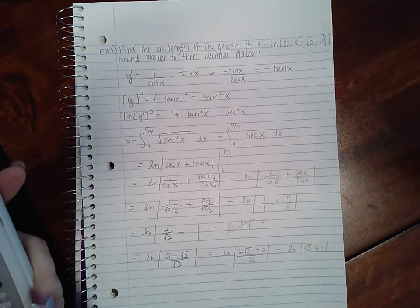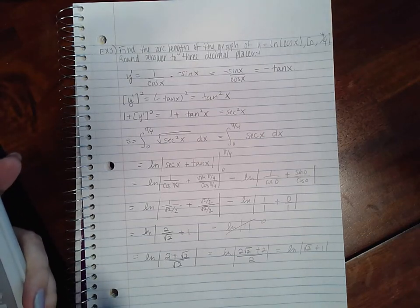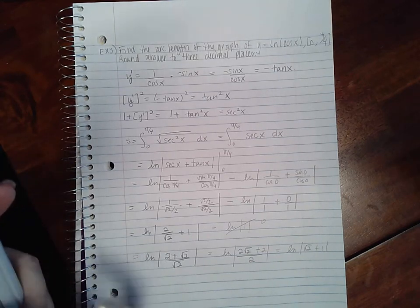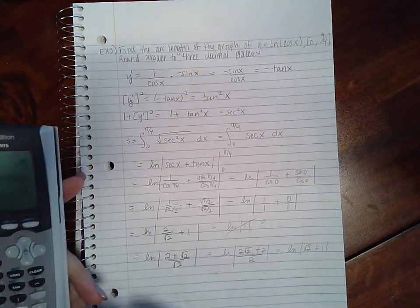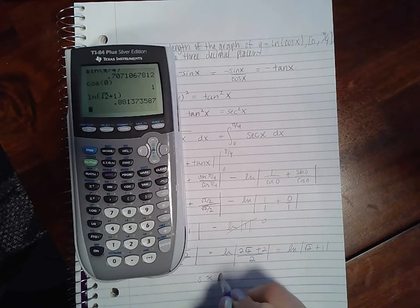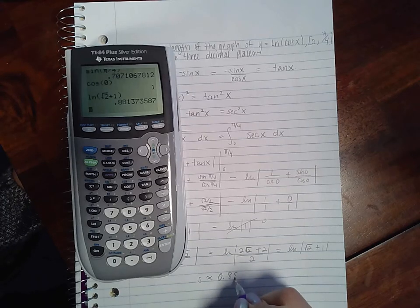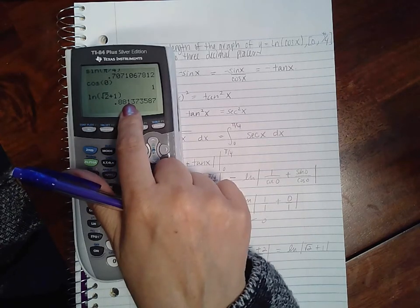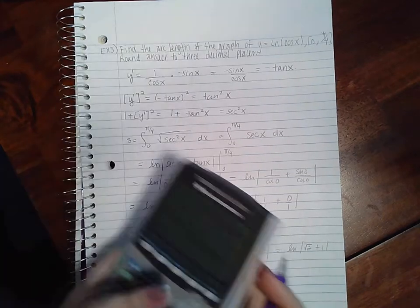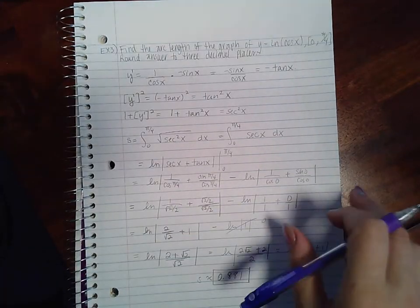ln of √2 + 1, I end up with 0.881 if I round it to three decimal places.